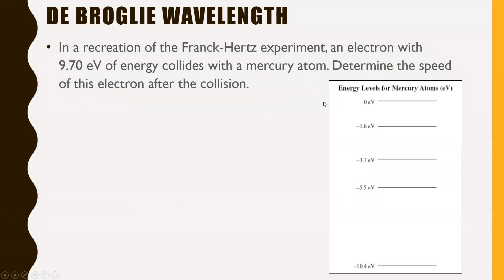So in a recreation of the Franck-Hertz experiment, an electron with 9.70 electron volts of energy collides with a mercury atom. Determine the speed of this electron after the collision. So I give you an energy level diagram for mercury atoms. We'll assume that this mercury atom initially had its electrons in its total stable bottom rest state. I want you to find the speed of the electron that struck this mercury atom after the collision. So I'll give you a hint, you will need to use this chart. Give it a try.